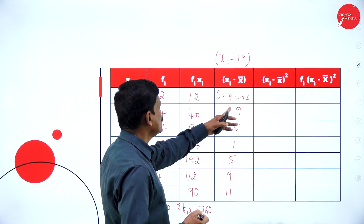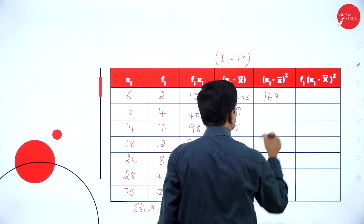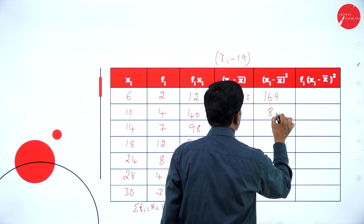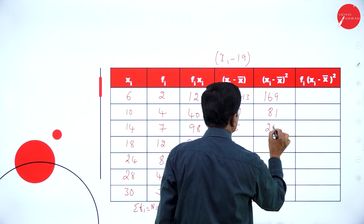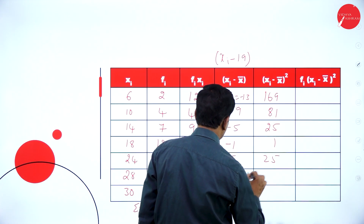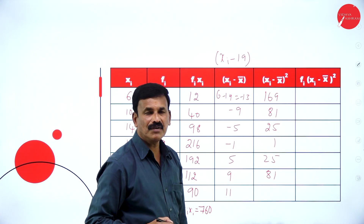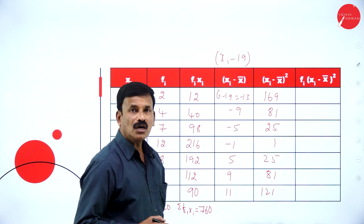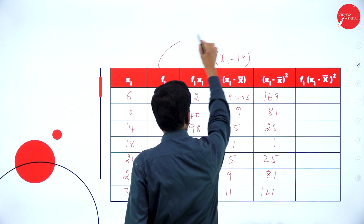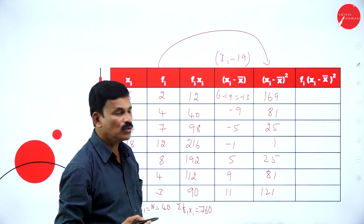Square each deviation: minus 13 squared is 169, 9 squared is 81, 5 squared is 25, 1 squared is 1, 5 squared is 25, 9 squared is 81, 11 squared is 121. Now multiply each with fi — fi into xi minus x-bar whole square. So: 2 into 169 is 338, 4 into 81 is 324, 7 into 25 is 175, 12 into 1 is 12, 8 into 25 is 200, 4 into 81 is 324, and 3 into 121 is 363.